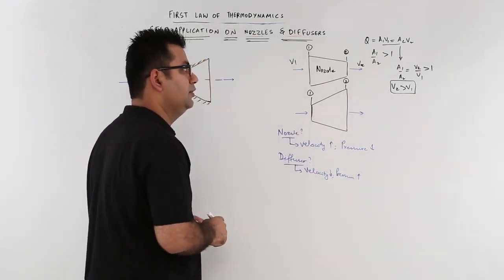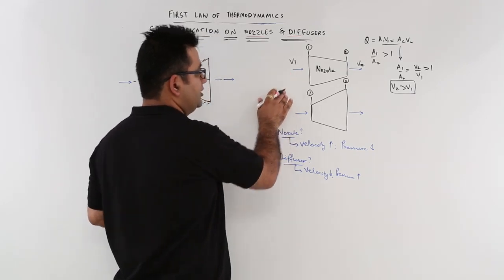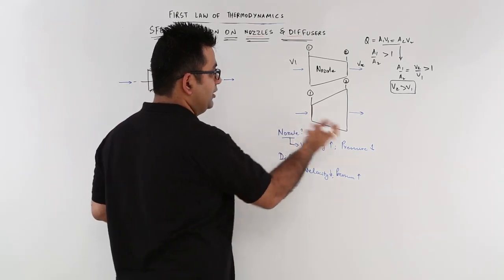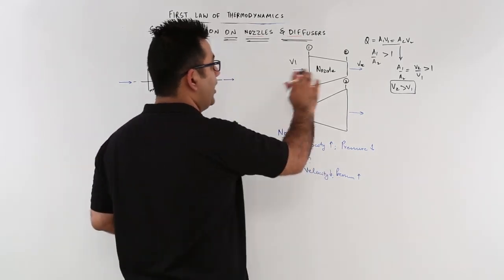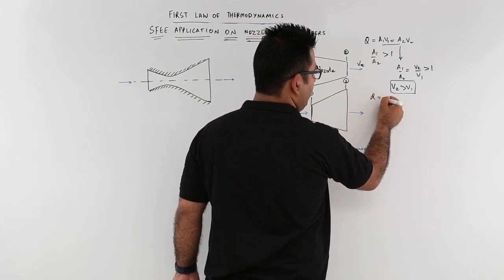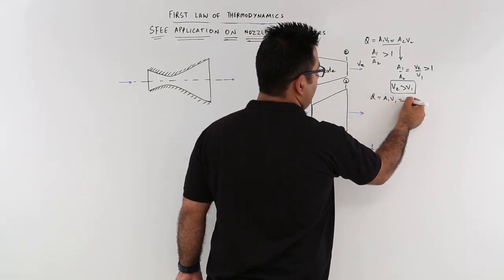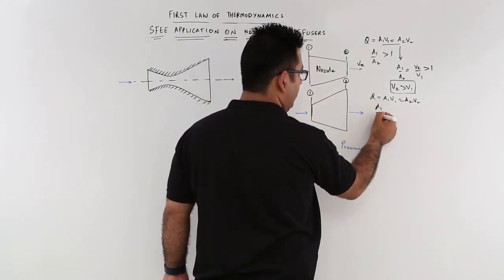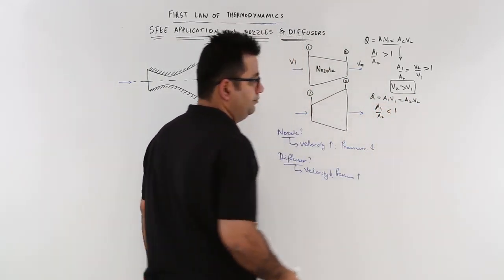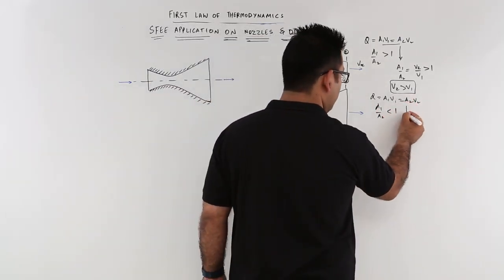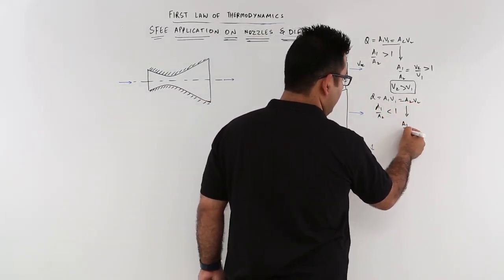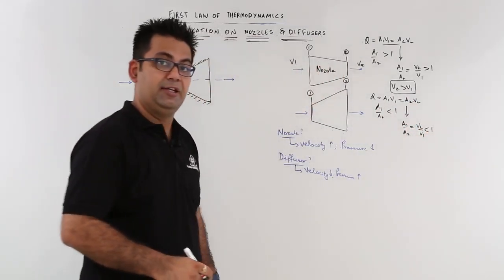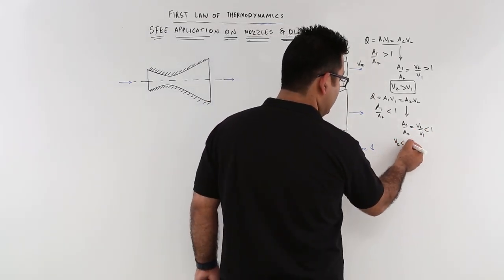Now let us come to the second thing. Now, of course, if this is nozzle, this has to be diffuser. Let us derive something which makes it a diffuser. So in this again we will apply the continuity equation. So q is equal to a1·v1 is equal to a2·v2. Now in this, a1 is less than a2. a1/a2 is less than 1. So if you compare these two equations, you will get a1/a2 is equal to v2/v1, which is less than 1. This means v2 is less than v1.